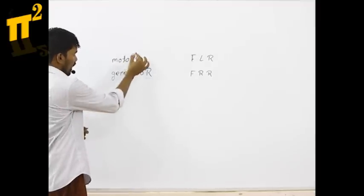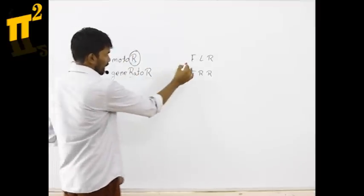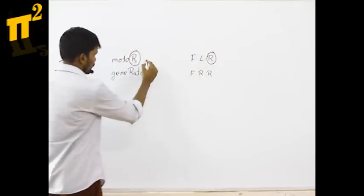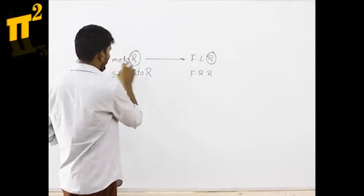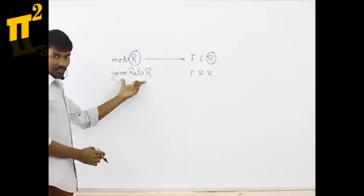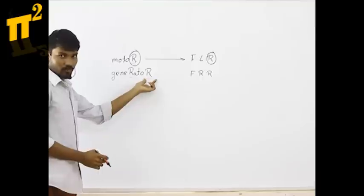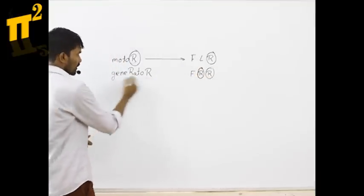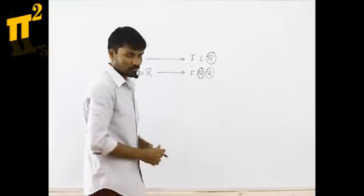If you see, in case of motor, one R is there. Among these two, this is having one R, so for motor Fleming's left hand rule. In case of generator, two R's are present. Here also two R's are present, so generator right hand rule.